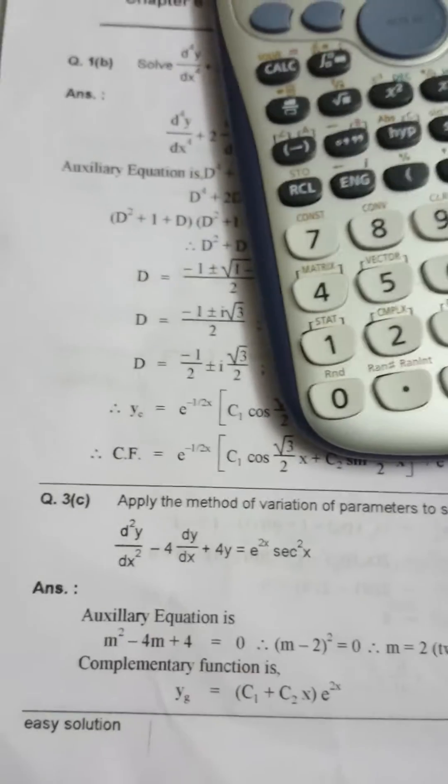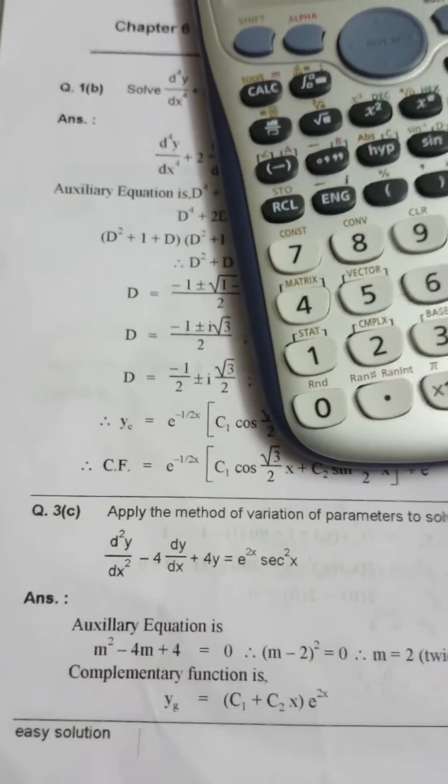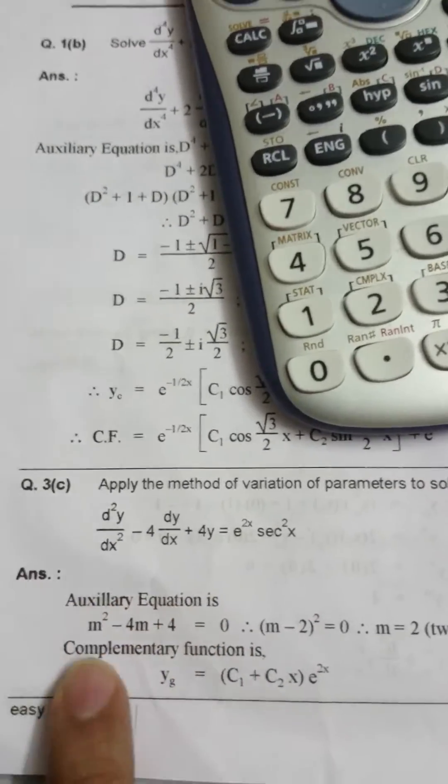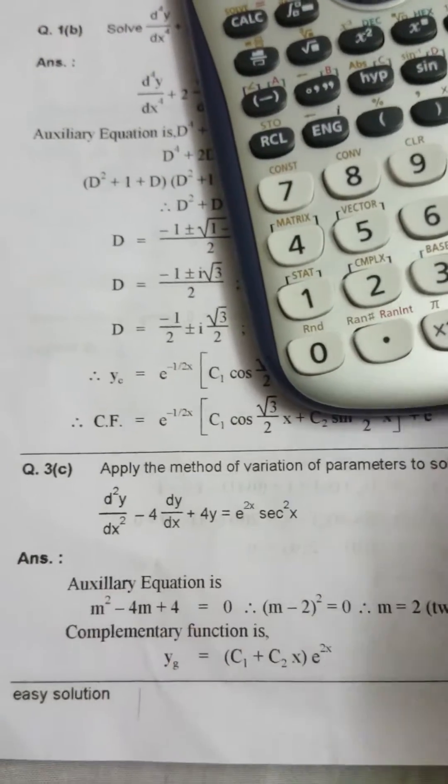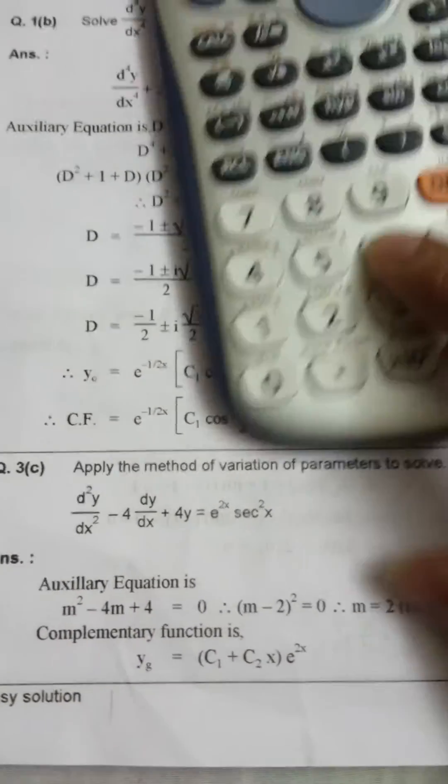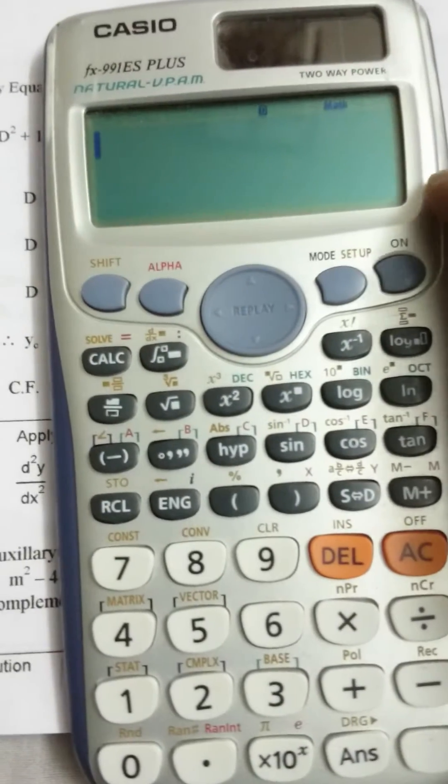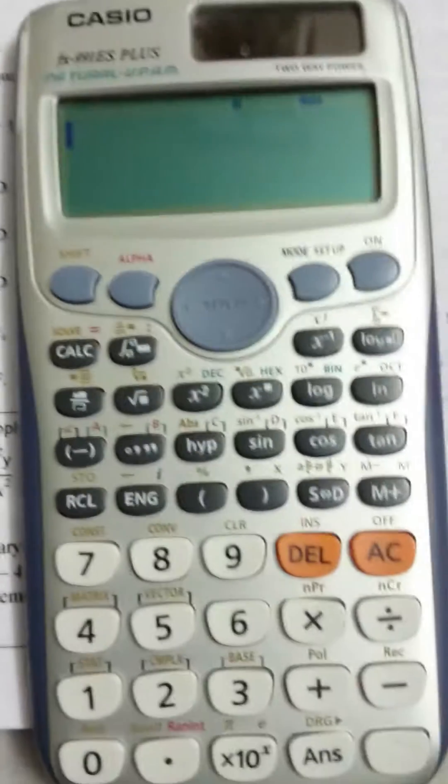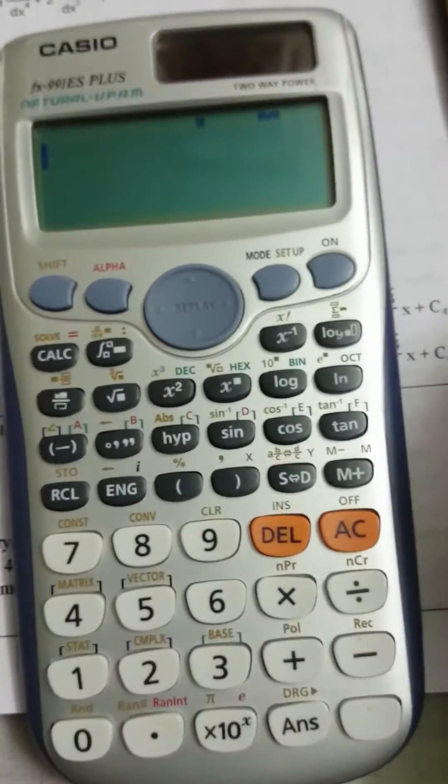Hello everyone, in this video I would like to show you how to solve an auxiliary equation m² - 4m + 4 = 0 using a Casio FX 991 ES plus calculator. It's very simple.